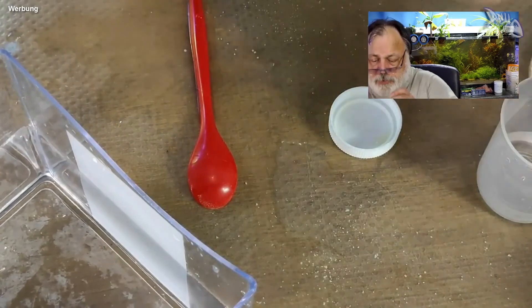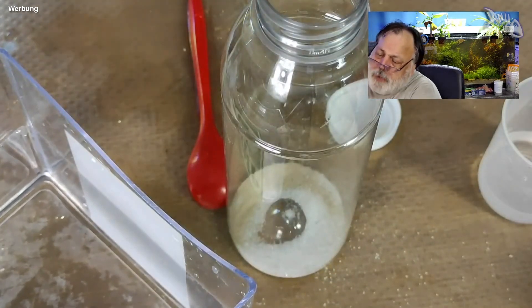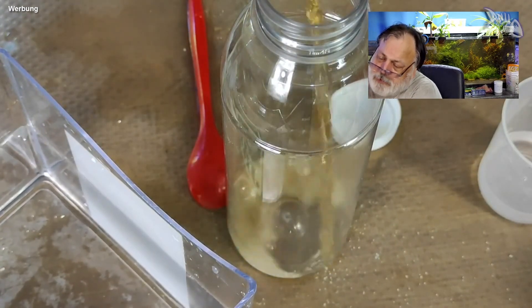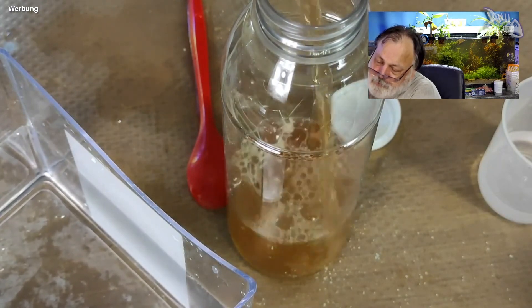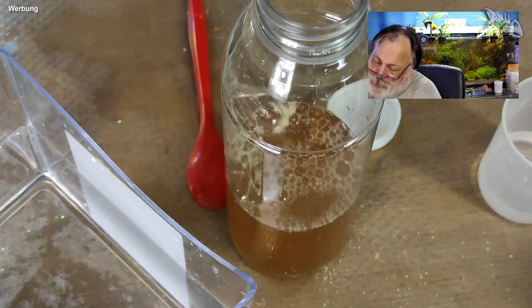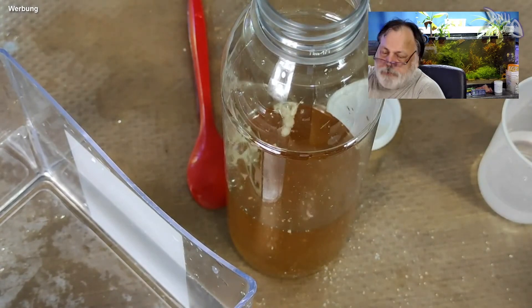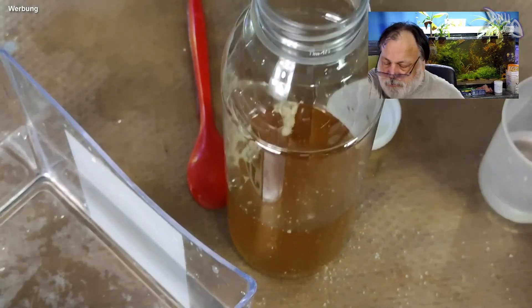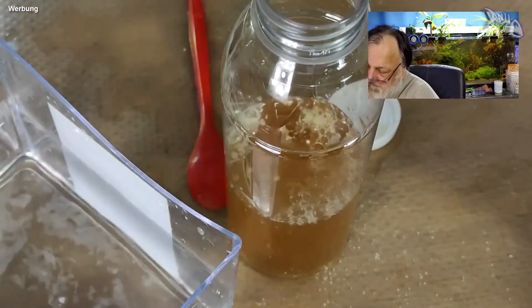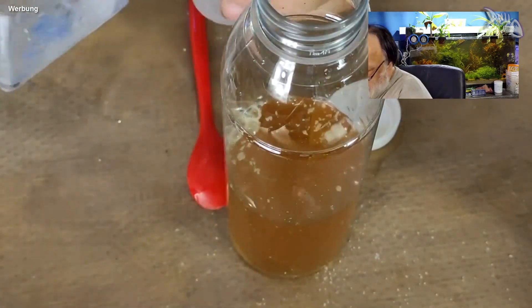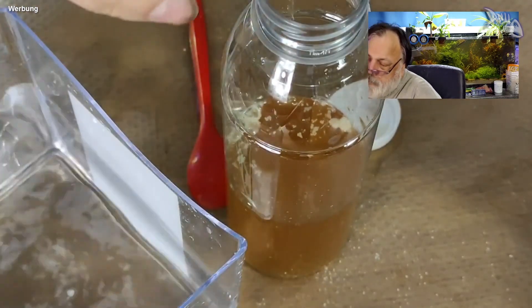Das gleiche machen wir mit der zweiten Flasche. Da machen wir das auch. Hälfte der Menge in Form von Apfelessig.